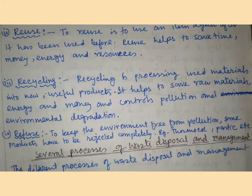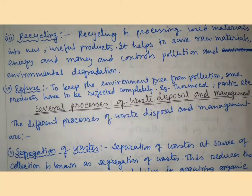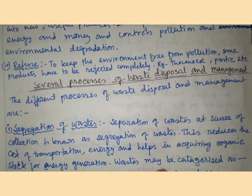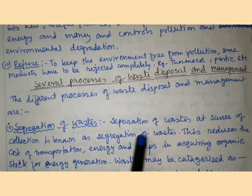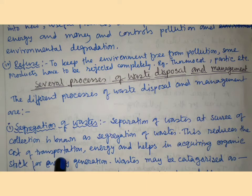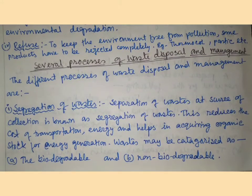Several processes of waste disposal and management: Segregation — separation of waste at the source of collection is known as segregation of waste. This reduces the cost of transportation and energy, and helps in acquiring organic stock for energy generation. Waste may be categorized as biodegradable or non-biodegradable.